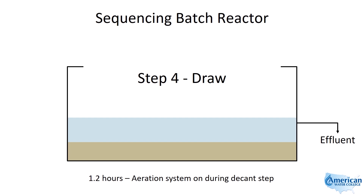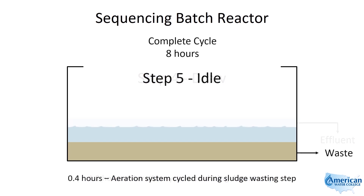Finally, there's an idle period when the required amount of sludge is wasted in order to return the mixed liquor suspended solids concentration to the desired range before starting the next treatment cycle. Once the wasting is complete, the cycle continues and the same sequence of steps will be repeated to treat the next batch of water.